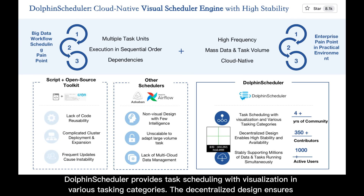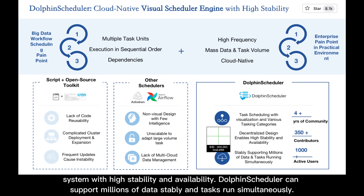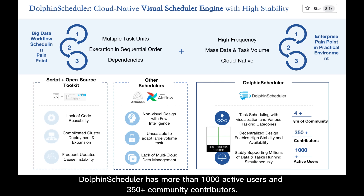Dolphin Scheduler provides task scheduling with visualization in various task categories. The decentralized design ensures a system with high stability and availability. Dolphin Scheduler can support millions of data stably with tasks running simultaneously. It has more than 1,000 active users and 350-plus community contributors.